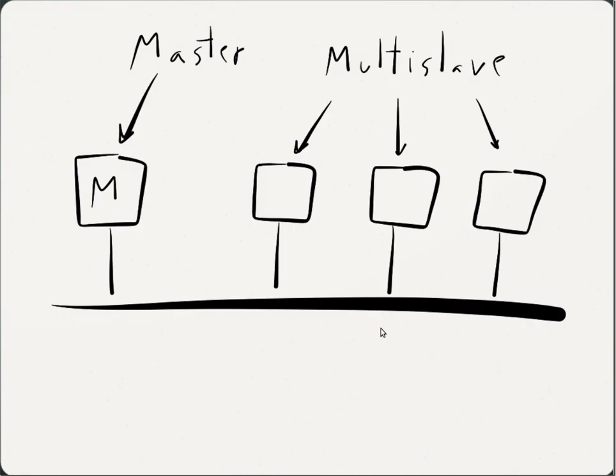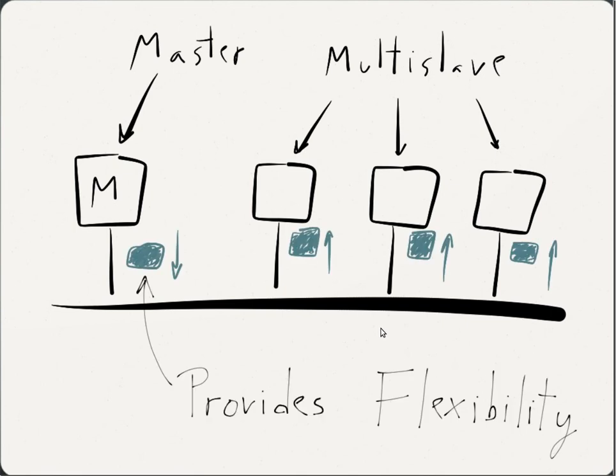It achieves this flexibility by using master-multi-slave communication. Specifically, the messages between the master and the slaves are what allow FTT-CAN to be flexible.